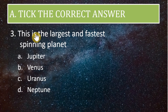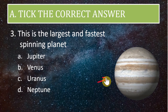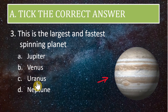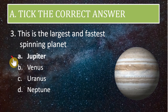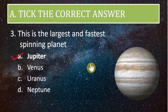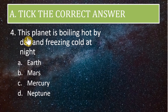Next question: this is the largest and fastest spinning planet. The options are Jupiter, Venus, Uranus, or Neptune. The correct answer is Jupiter. Jupiter is the largest and the fastest spinning planet.